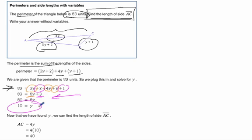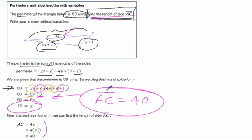But that's not the answer to the question. The question says find the length of AC, which is 4y. So we multiply by 4 to get AC equals 40 as our final answer.